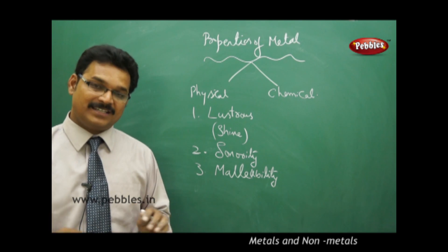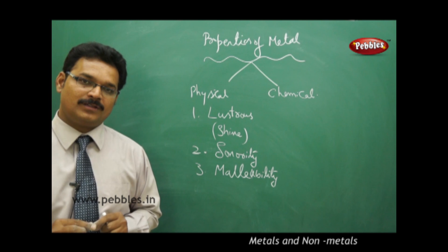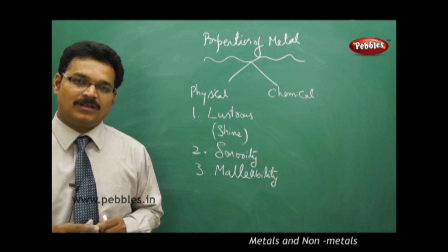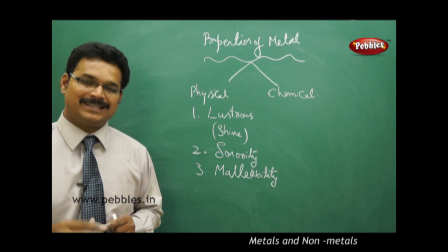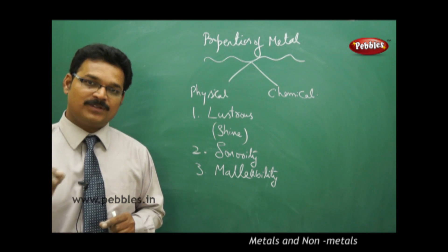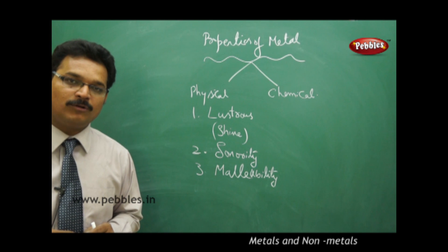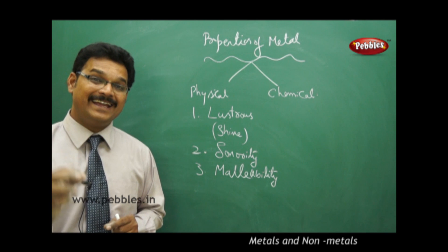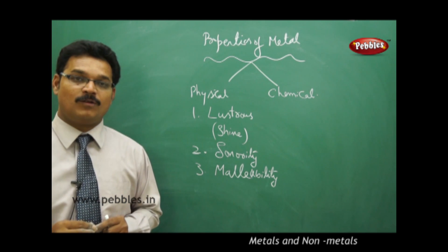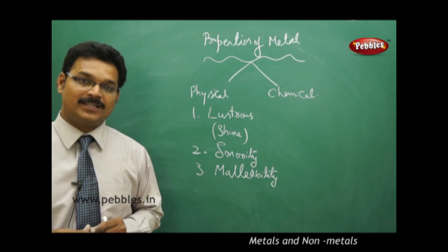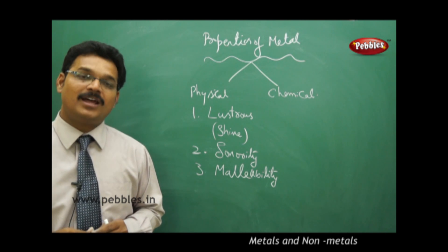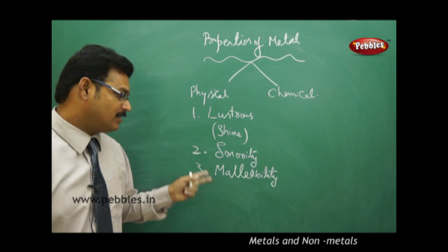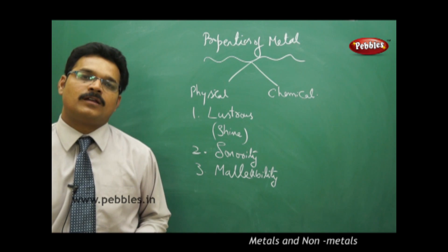With this property we understand that all metals can be flattened into thin sheets. If you go to a person making different shapes using metals and observe, suppose you want to make a shape using iron. He will heat the iron material to high temperature, then hit on it and mold it into different shapes. All this is possible because of malleability.